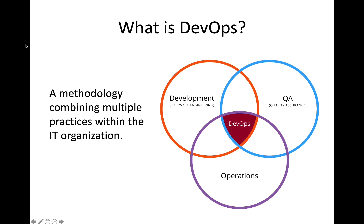Another way to look at DevOps is as a methodology that combines practices from multiple organizations, multiple groups within the IT organization. You might have a software development team within the organization, and then a separate quality assurance team and a separate operations team. DevOps really kind of falls in the middle, and it combines many of the practices and methodologies that were previously implemented by these separate teams.